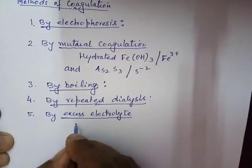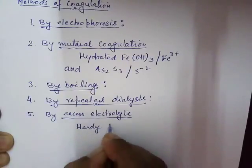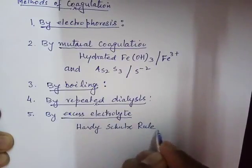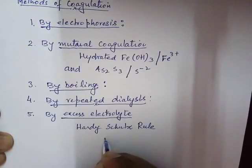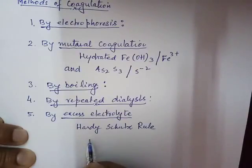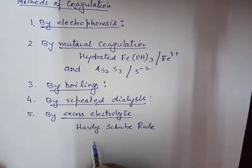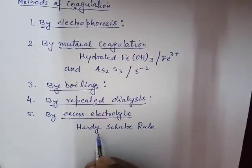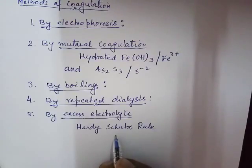There is a rule we will study in the next video — the Hardy-Schulz rule — regarding the charge present on the colloidal particle as well as the power of the electrolyte. In the Hardy-Schulz rule, we will study the power of the electrolyte added for causing coagulation. Some ions will bring about coagulation very quickly, some will require more time or a larger amount, and some ions may cause coagulation or precipitation even when added in a small amount. Thanks for watching.